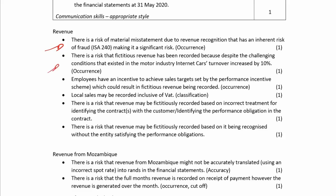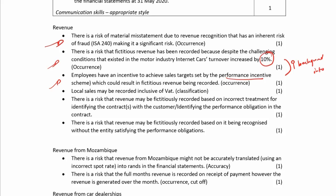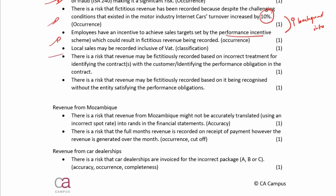Because they had such an increase in revenue - which was in the background information - there was a risk that they recorded fictitious revenue. They also had a performance incentive scheme, also from the background information, creating a risk that they recorded fictitious revenue. Then for local sales there's a VAT classification risk. Remember there are two risks that always appear with revenue because of the IFRS 15 requirements: the risk that revenue is recorded based on incorrect treatment of the contract, and the risk that they don't satisfy the performance obligations.